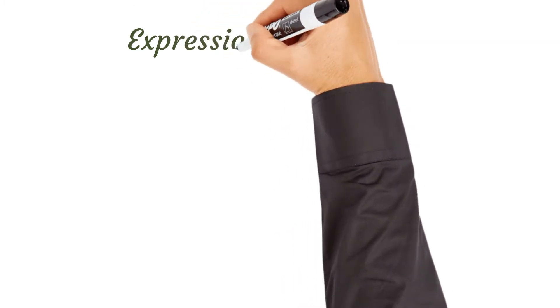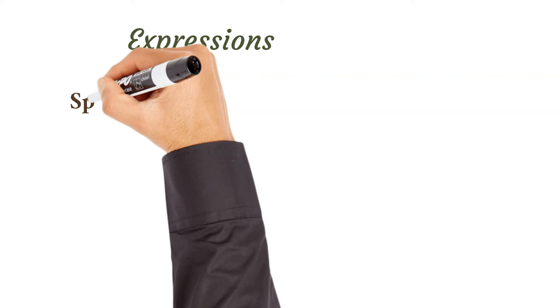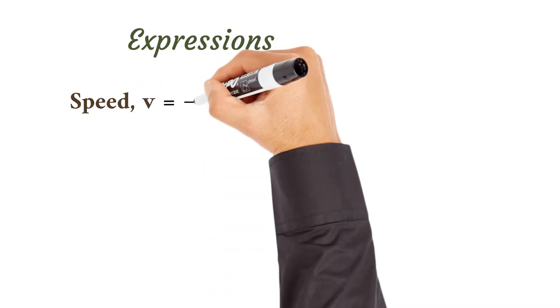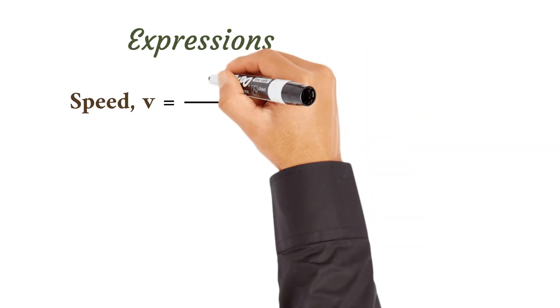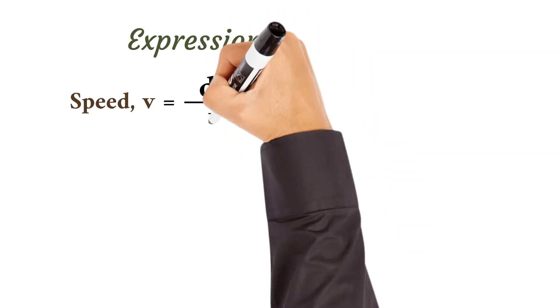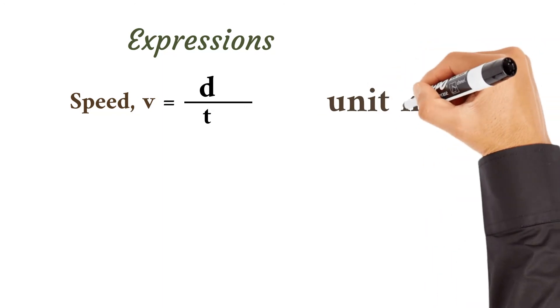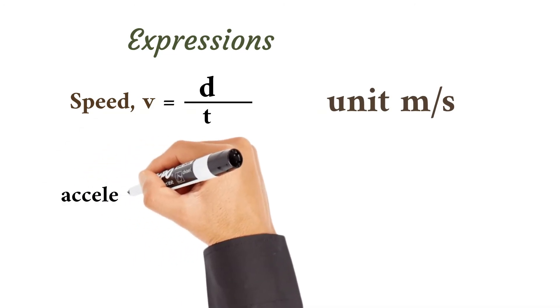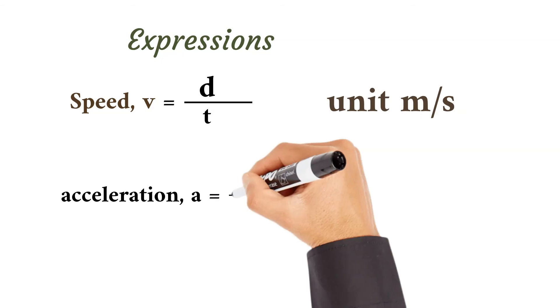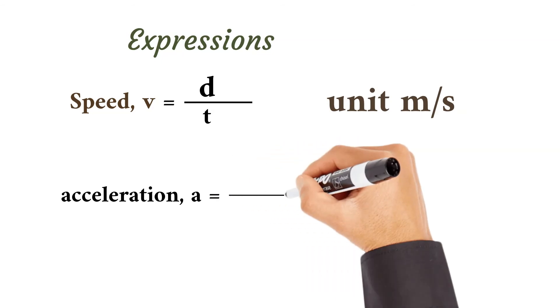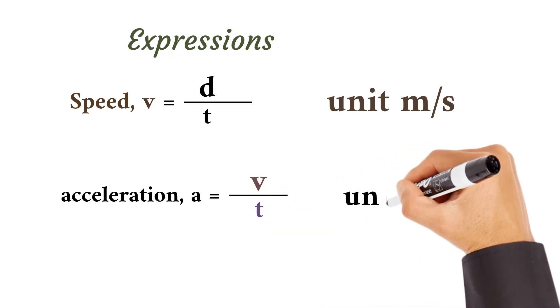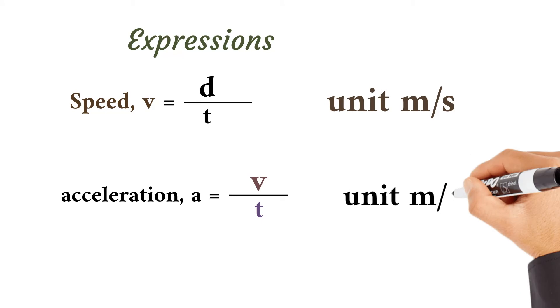Now, expressions to take note of. First, speed or velocity v equals distance over time, d over t. The unit is meters per second. m is used to measure d and s is used to measure t. Acceleration a equals velocity over time. The unit is meters per second squared.